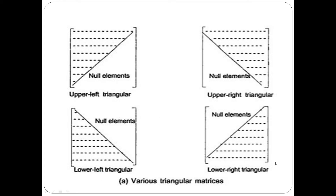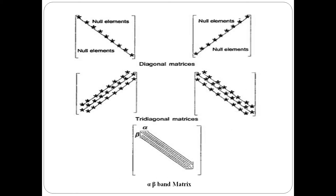In one square matrix, this particular area of elements is non-zero and remaining elements zero — it is called upper left triangular. For the diagonal matrix: this is the positive diagonal, this is the negative diagonal, and these are the leading elements. The diagonal elements are non-zero and remaining elements zero — it is called a diagonal matrix.